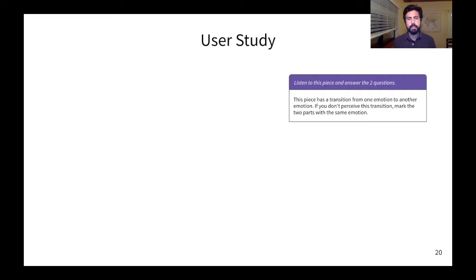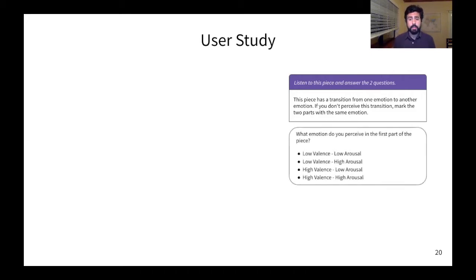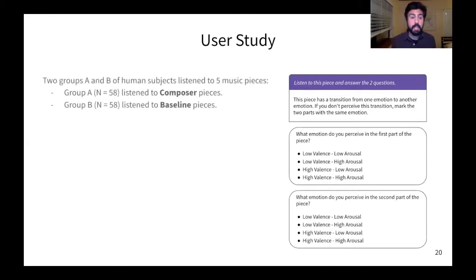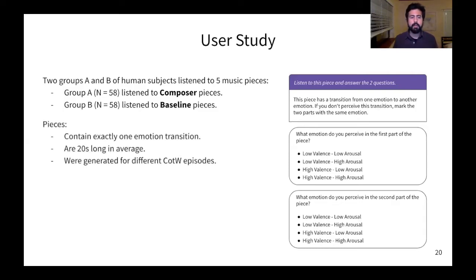In our last experiment, we ran a user study where we asked human subjects to listen to music pieces containing one emotion transition in them. And we asked these subjects two questions: what is the emotion you perceive in the first part of the piece? And what is the emotion you perceive in the second part of the piece? So this user study was designed with two independent groups, A and B, where each group was composed by 58 participants. Group A listened to composer pieces and group B listened to baseline pieces. Each piece contains exactly one emotion transition, and they are on average 20 seconds long. And each piece was generated for a different Call of the Wild episode.